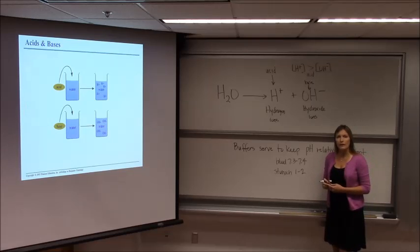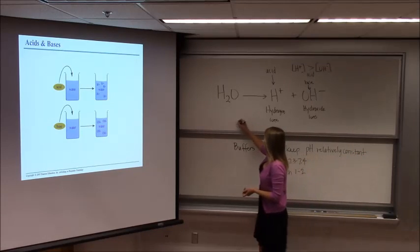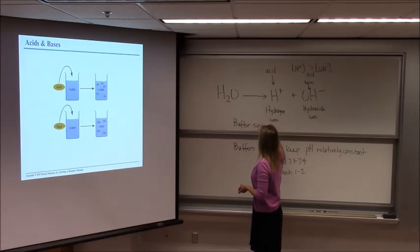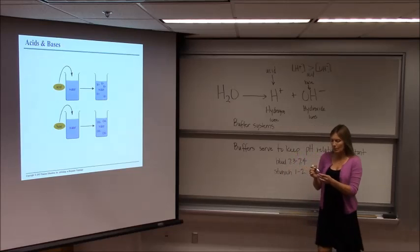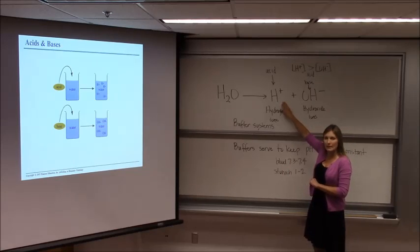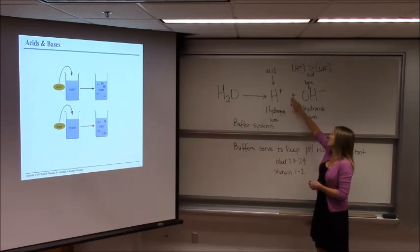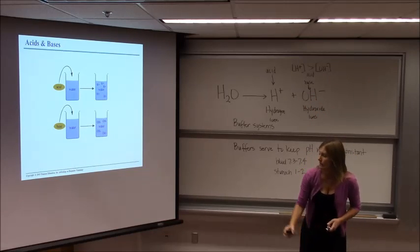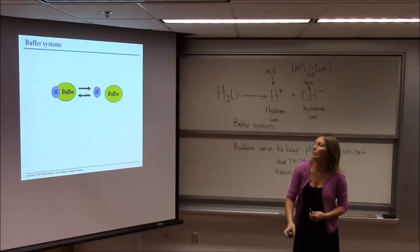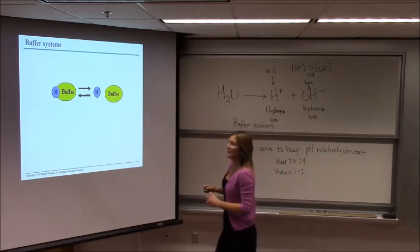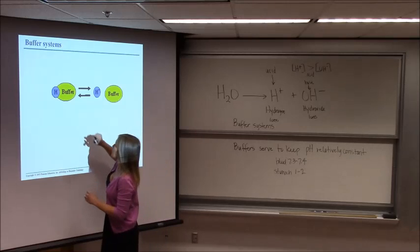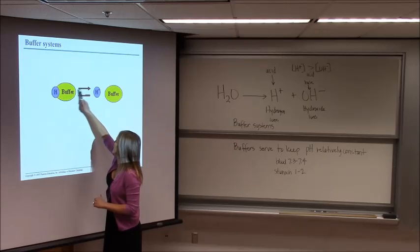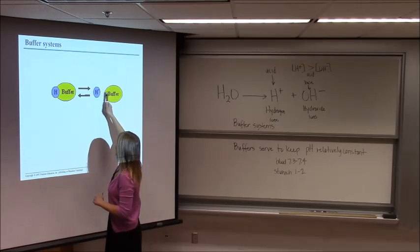The way buffers work, it's usually called a buffer system. Because buffer systems can adjust regardless of what the situation is. In other words, if it becomes too acidic, the buffer system will shift one direction. And if it becomes too basic, the buffer system will shift the other direction. What do I mean by that? Here's a very basic example of that. So this would be the buffer with the hydrogen ion attached, and then now this is going to be the buffer with the hydrogen ion released.